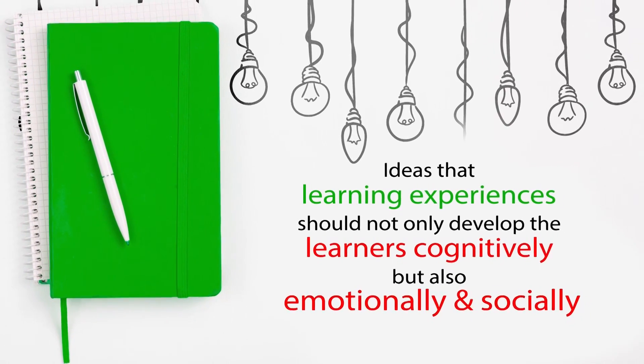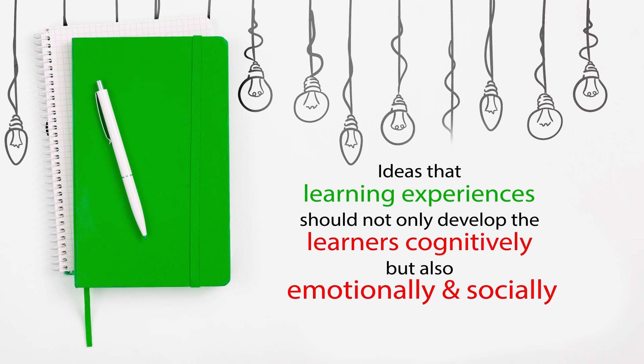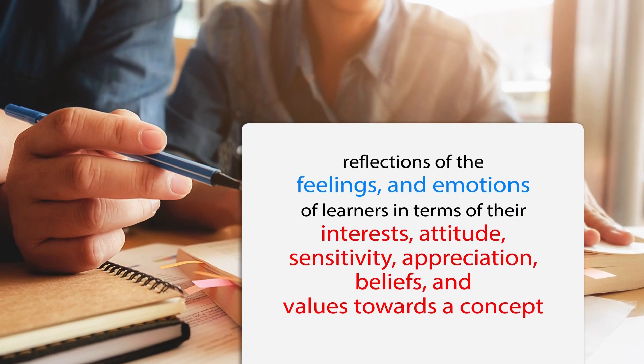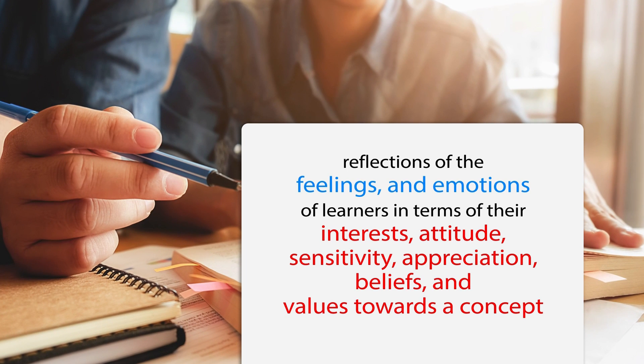Based on the idea that learning experiences should not only develop learners cognitively, but also emotionally and socially, this affective domain of objectives is very important. It acknowledges that there is a non-cognitive aspect of personality related to one's values — what a person prioritizes in life — and reflects feelings and emotions in terms of interest, attitude, sensitivity, appreciation, and values. These objectives were further divided into five categories based on the learner's demonstrated behavior, showing the extent of association with a concept.